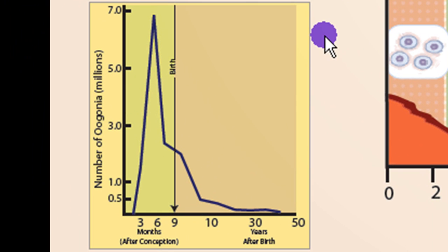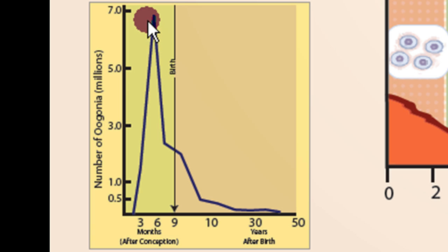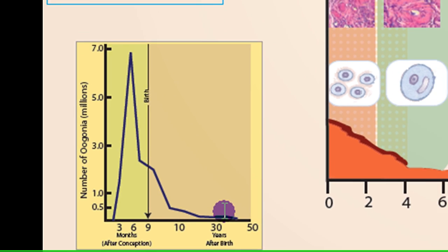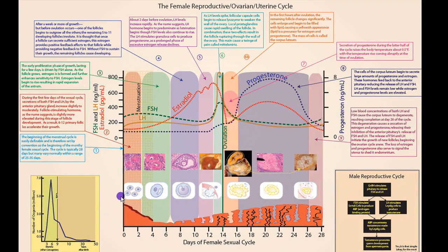One last thing before we go through the individual stages: this graph shows the number of oogonia, which are very early developed oocytes. While the female is still in the womb herself, she will create up to seven million oogonia — that's at about six months of development. At the time of birth, that's down to a little over two million. At reproductive age, around 10 years old, there's only about 400,000 oogonia left. Those will continue to reduce over the years because each month a few of those follicles are chosen to develop into an oocyte that can be fertilized.